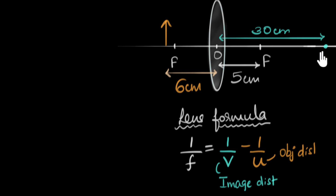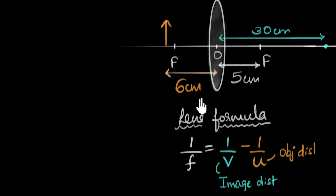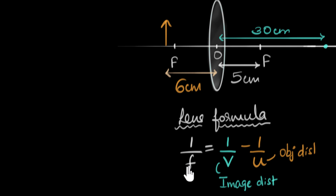In this particular video, we want to figure out what the height of this image is, and we also want to know whether this would be a real image or a virtual image. Again, we don't want to draw any ray diagrams. Since we're not using ray diagrams, we might need a formula for the height of the image. The lens formula has nothing to do with heights, so there's another formula — called the magnification formula.